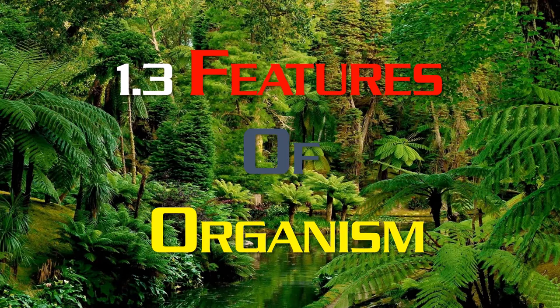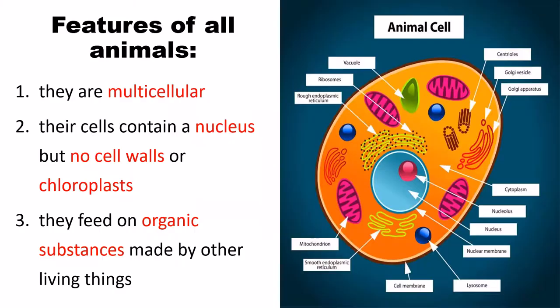Today I'm going to discuss the topic: features of organisms. Before entering into the topic, you should know there are five kingdoms: animal, plant, fungi, protists, and prokaryote. Let's start with the main features of all animals.